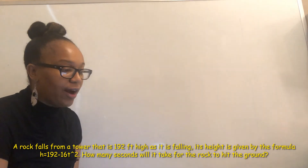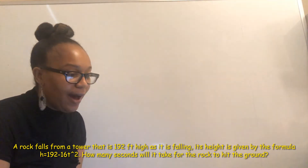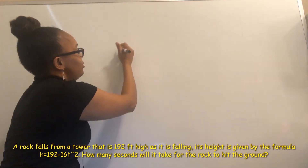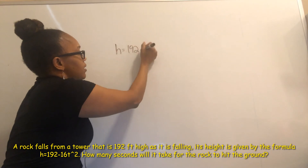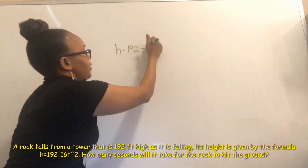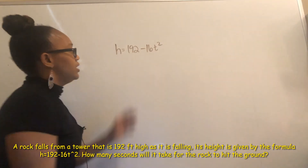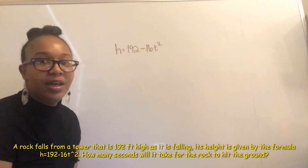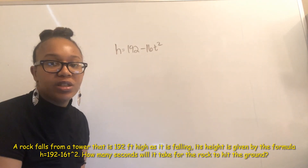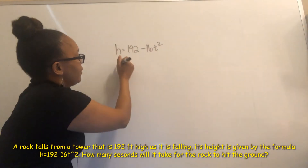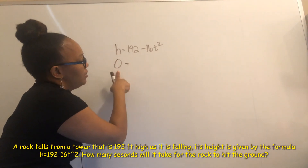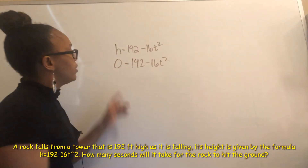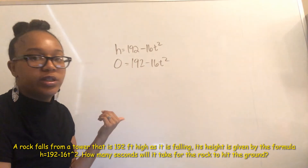For this last example, a rock falls from a tower that is 192 feet high. As it is falling, its height is given by the formula H equals 192 minus 16T squared. How many seconds will it take for the rock to hit the ground? The rock hitting the ground corresponds to H equal to zero, so we want to find T when the height is zero. We replace H with zero to get the quadratic equation to solve.